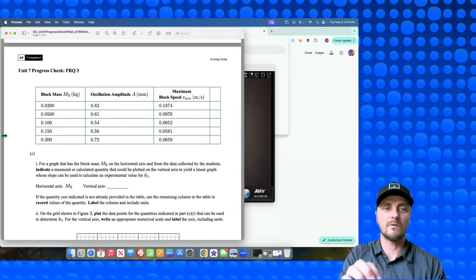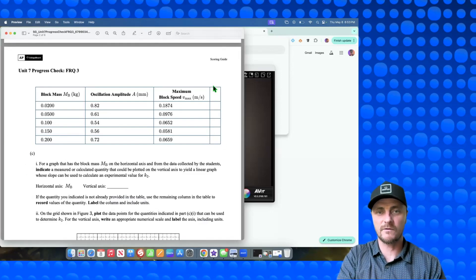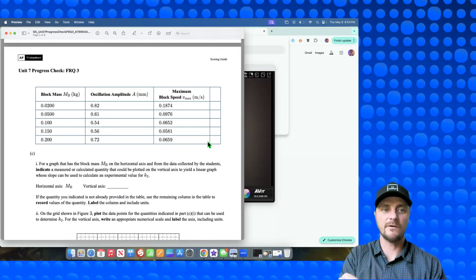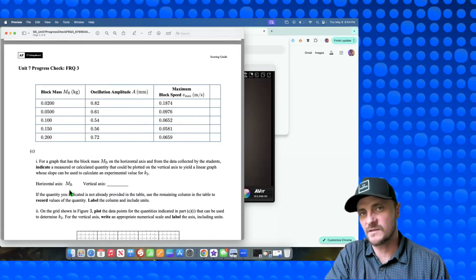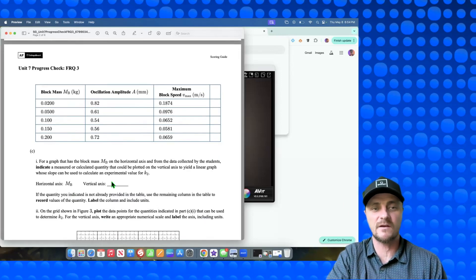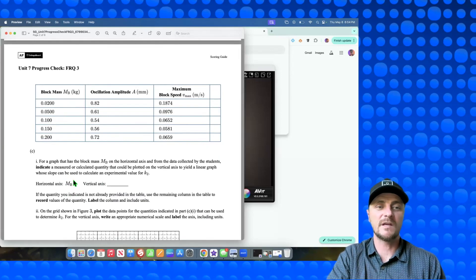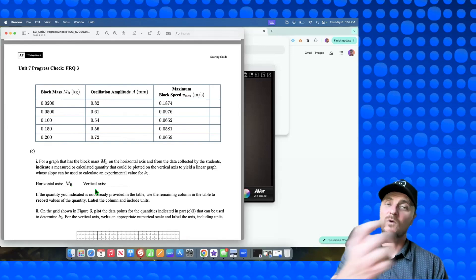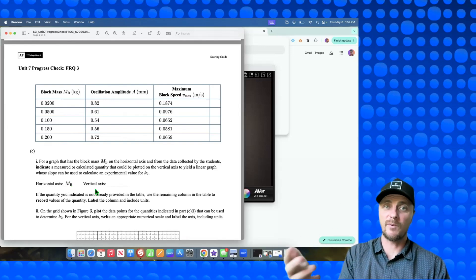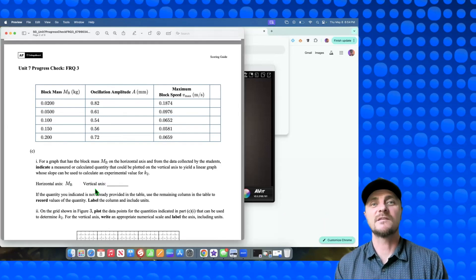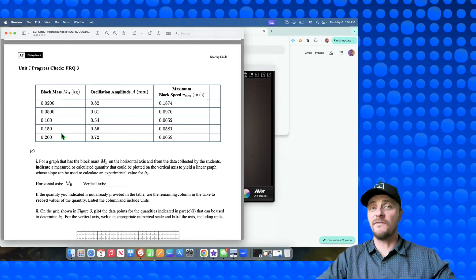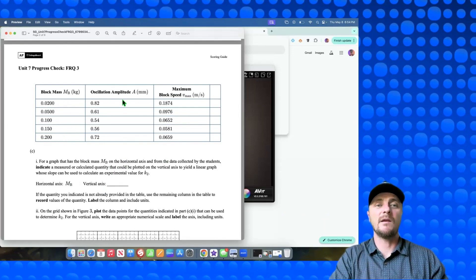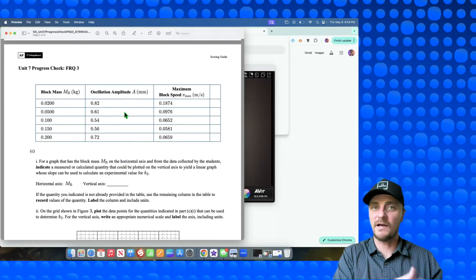So given this information, we know we have to create a graph, and from that graph, we will obtain a new spring constant value K2. For a graph that has the block mass MB on the horizontal axis and from the data collected by the students, indicate a measured or calculated quantity that can be plotted on the vertical axis to yield a linear graph whose slope can be used to calculate an experimental value for K2. It would have been nice if they said we could put mass on the vertical axis, but they're forcing us to put MB, the mass of the block, as it changes five times, on the horizontal axis. Now before when I was brainstorming with you about what to do for part A and B, and we talked about energy, this is the time to use energy.